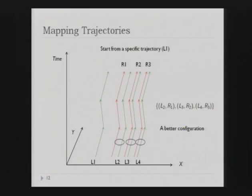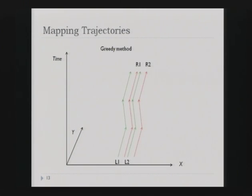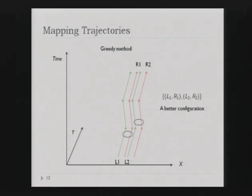Using a greedy method — always taking the closest pair of trajectories — we can get a better configuration. However, even the greedy method may not work every time. For example, the greedy method might assign R1 to L2 first, forcing L1 to map to R2, which is a bad mapping. A better mapping is L1 to R1 and L2 to R2. Although the closest remote trajectory to L2 is R1, on average the second configuration is a better mapping.